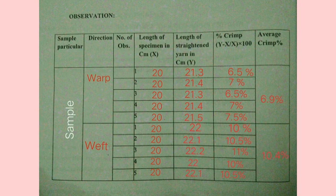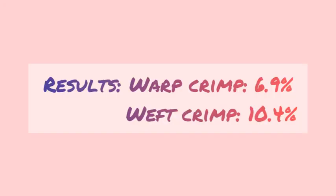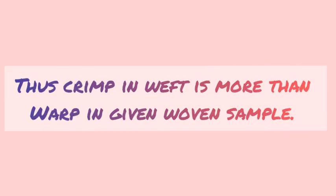And then take out the average of the weft crimp. From the calculation we can see that warp crimp is 6.9 percent and weft is 10.4 percent. Thus we can conclude that crimp in weft is more than warp in the given woven sample.